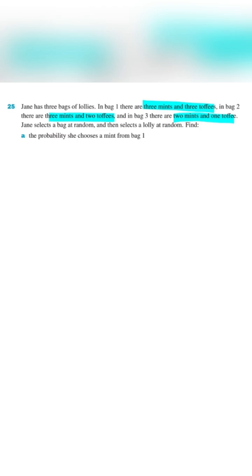So there are two events at play here. First one is when Jane has to choose between different bags and then she has to choose among the lollies. For this kind of question where there are multiple events at play or they are cascaded events, it's always recommended to draw a tree diagram.